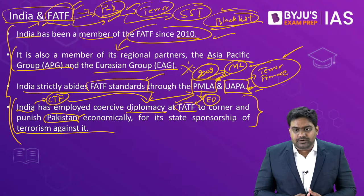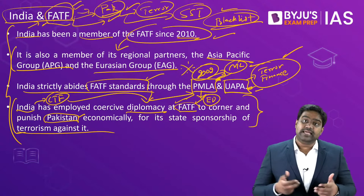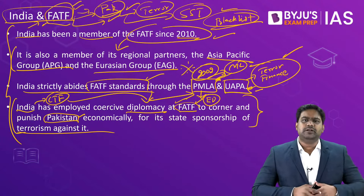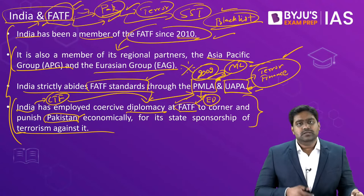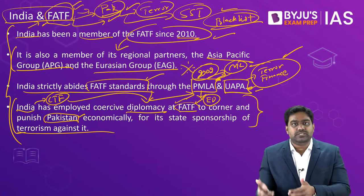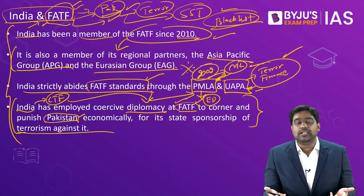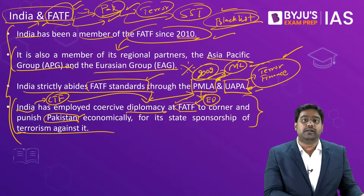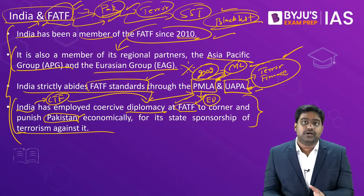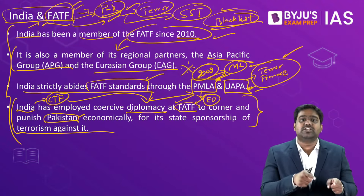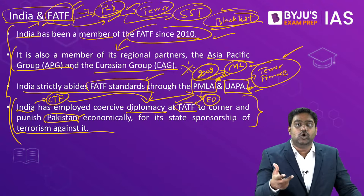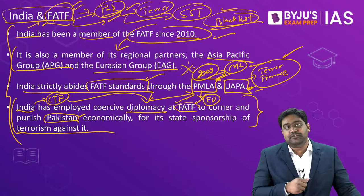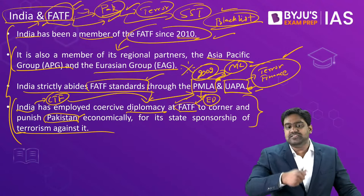What will happen if countries don't take action even after being blacklisted? Economic sanctions are imposed on that country. If a country is blacklisted and still continues with the same behavior, the economic sanctions will continue. Look at what has happened with Iran and North Korea — they have been largely cut off from the global economy and their economies are collapsing. Even Pakistan, whose economy is already struggling, has taken a very big hit after being grey-listed. Even grey-listing by FATF has an impact — it's not easy to get capital or loans from abroad when you are grey-listed.